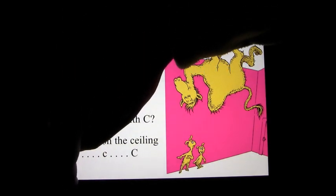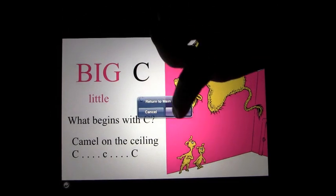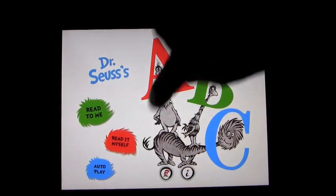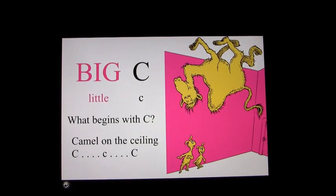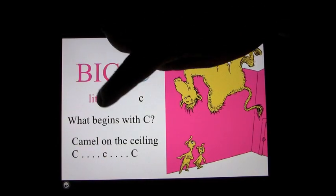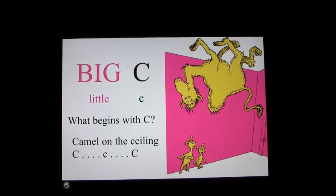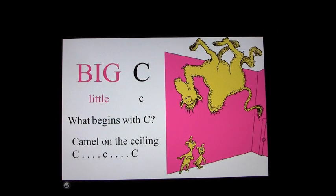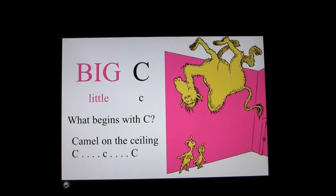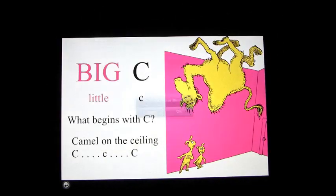We'll go back to the main menu, read it myself, and resume from there. Big C, little c. So obviously you would read it: Big C, little c, what begins with C? Camel on the ceiling, C, C, C. If you weren't familiar with a word, let's say you got stuck on 'begins,' you could press it and it would play it for you. That's how that part works.